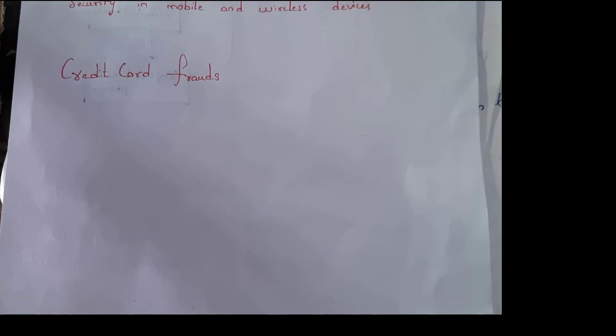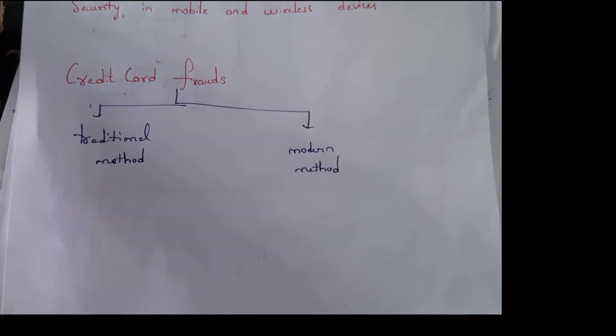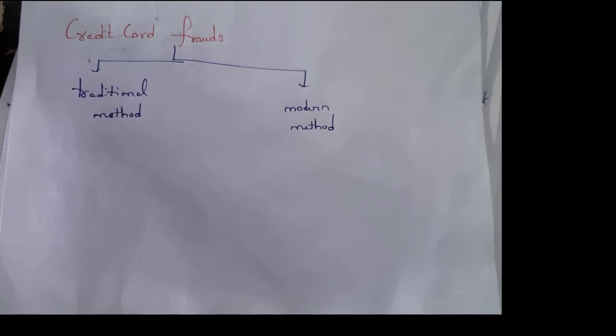Next one is credit card frauds. Nowadays many people are using credit cards for online shopping, online transactions, and more. Credit card frauds are crimes performed by using credit cards. These frauds are classified into two types: traditional method and modern method.